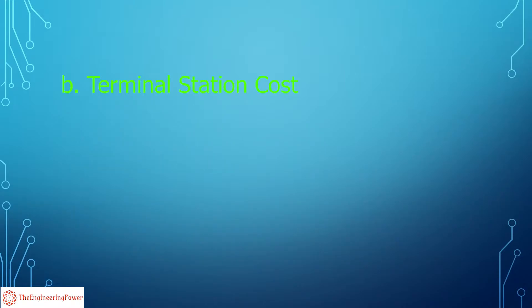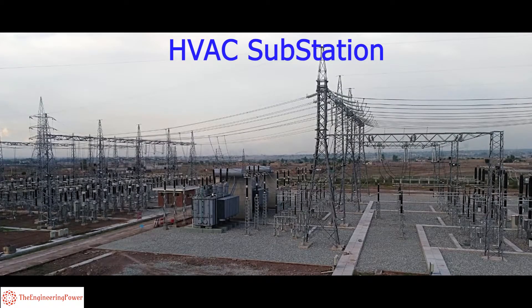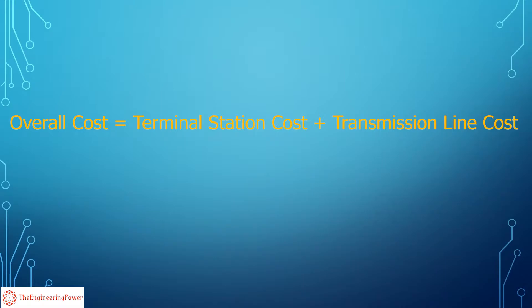Terminal converter stations in HVDC are much more expensive than the substations used in HVAC system. The overall cost of transmission is based on the terminal station cost and transmission line cost. The terminal station cost is normally fixed whereas the transmission line cost increases with the distance. So we can conclude that overall cost of transmission increases with the distance.